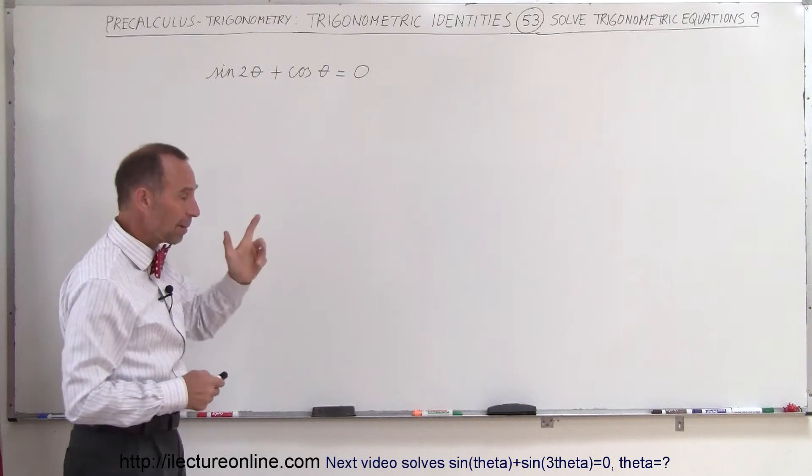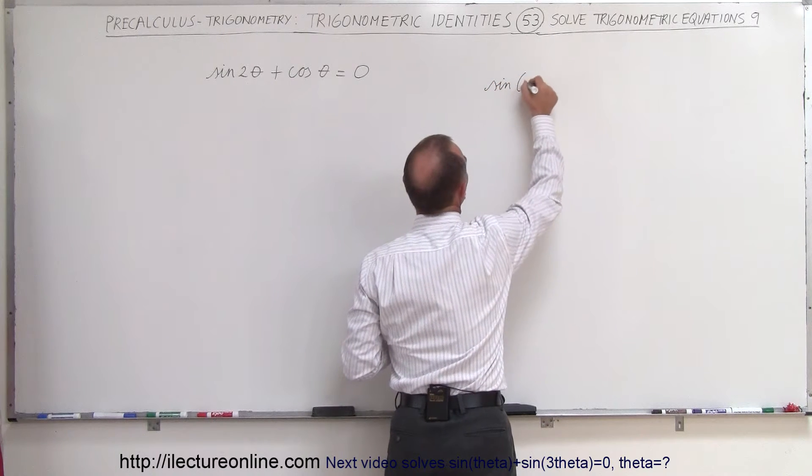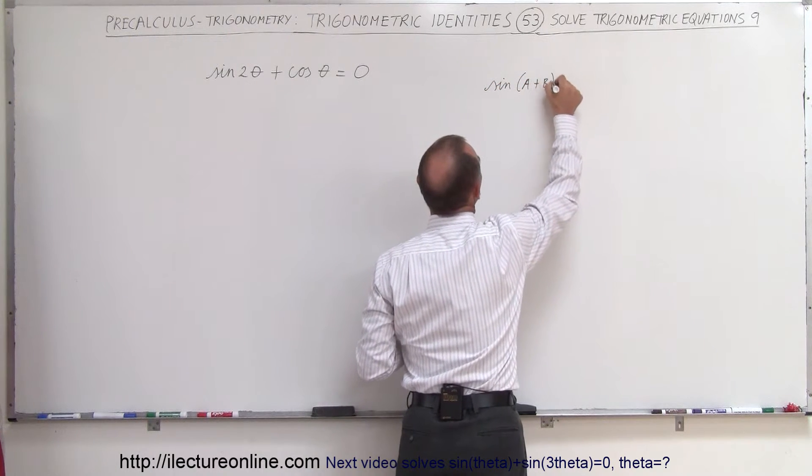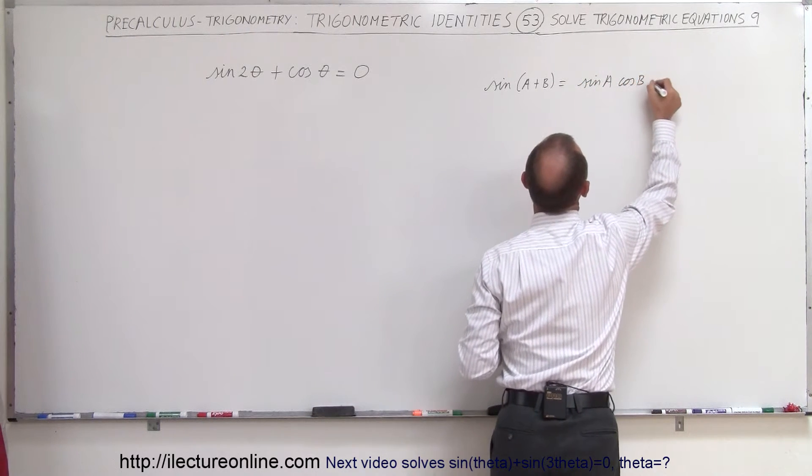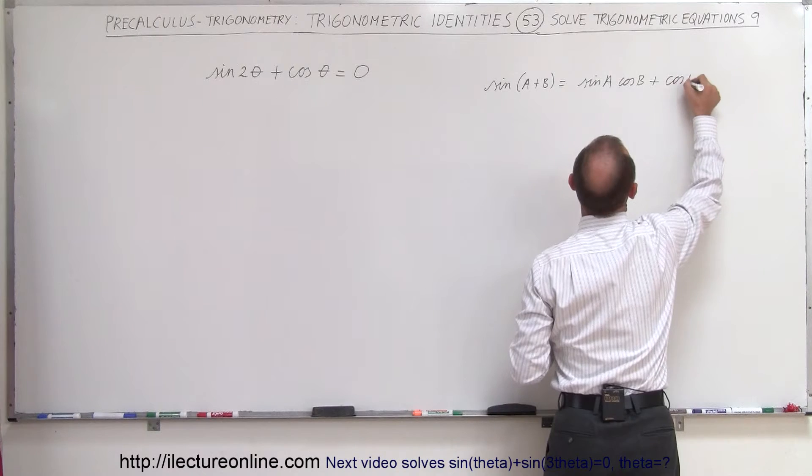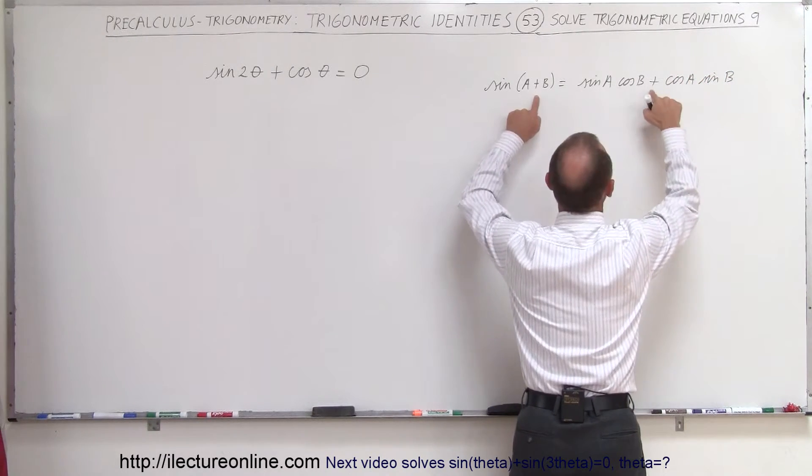Here we have a double angle. Remember the equation that if you have the sine of A plus B, that equals the sine of A times the cosine of B plus the cosine of A sine of B. Remember if this is plus, that's plus as well.